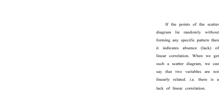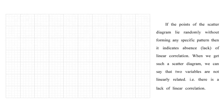The fifth type is when points of the scatter diagram lie randomly without forming any specific pattern, showing an absence of any correlation. The five types are: perfect positive correlation, perfect negative correlation, partial positive correlation, partial negative correlation, and lack of linear correlation.